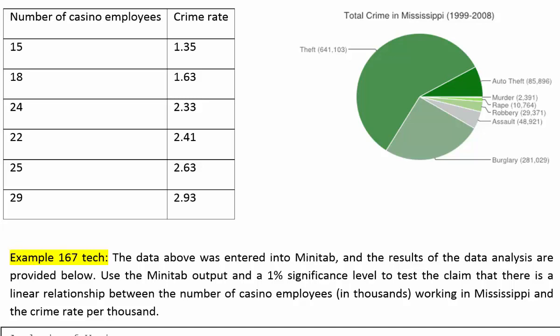Example 167. The data was entered into Minitab and the results of the data analysis are provided below. Use the Minitab output and a 1% significance level to test the claim that there is a linear relationship between the number of casino employees in thousands working in Mississippi and the crime rate per thousand.